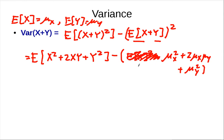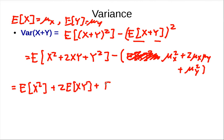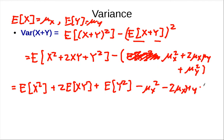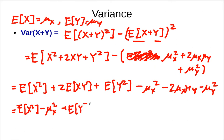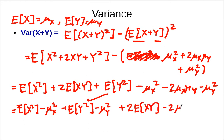Expanding everything out, you get the expected value of x squared plus 2 times the expected value of xy plus the expected value of y squared, minus mu_x squared minus 2 mu_x mu_y minus mu_y squared.